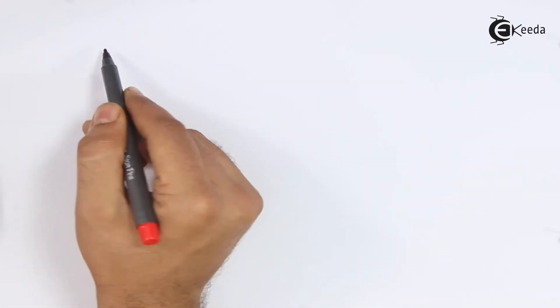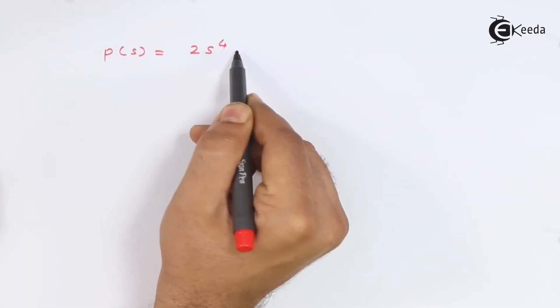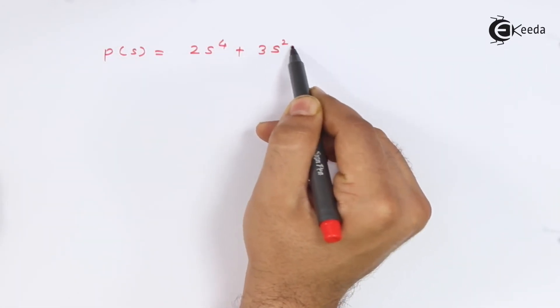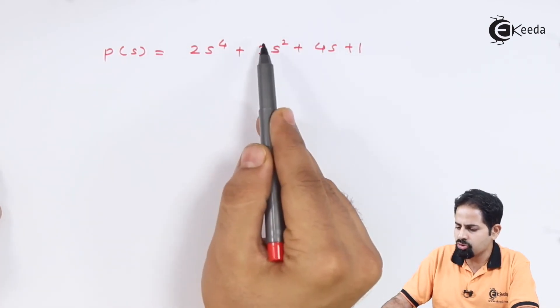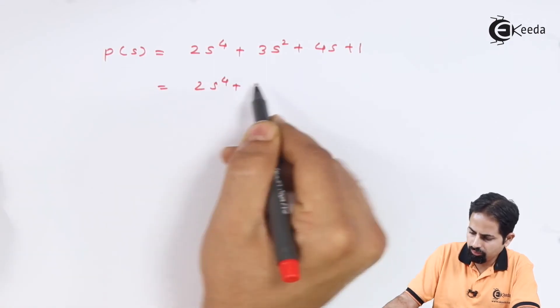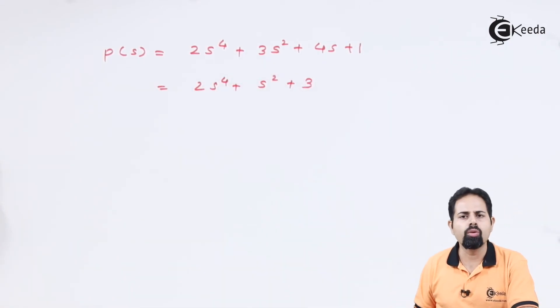For example, this is not allowed because S rest to three is not missing, but this is allowed because all odd terms are missing and all even terms are present.